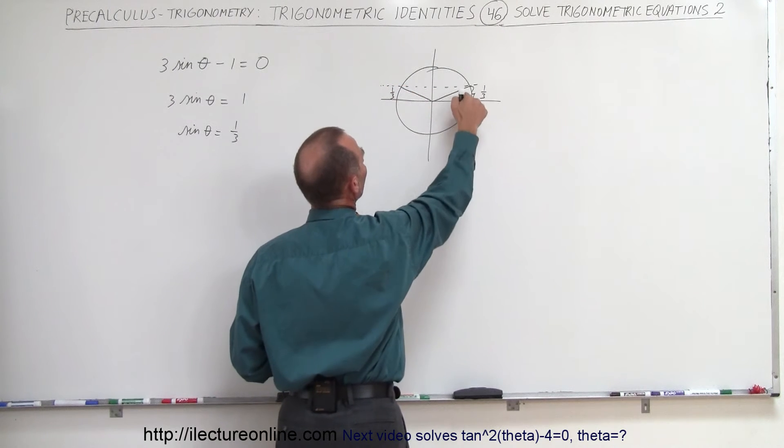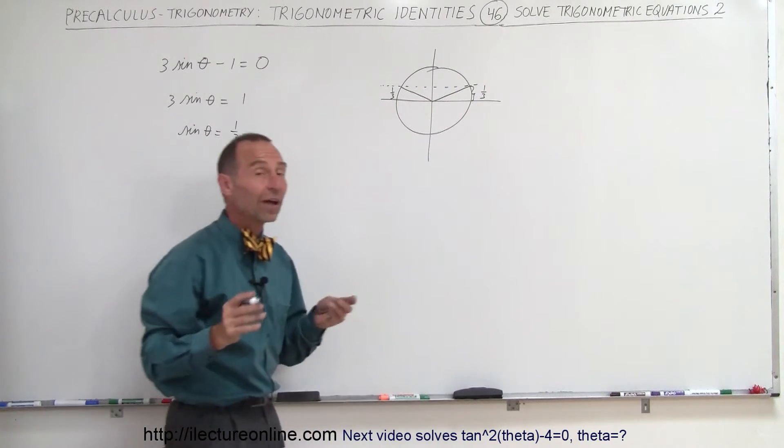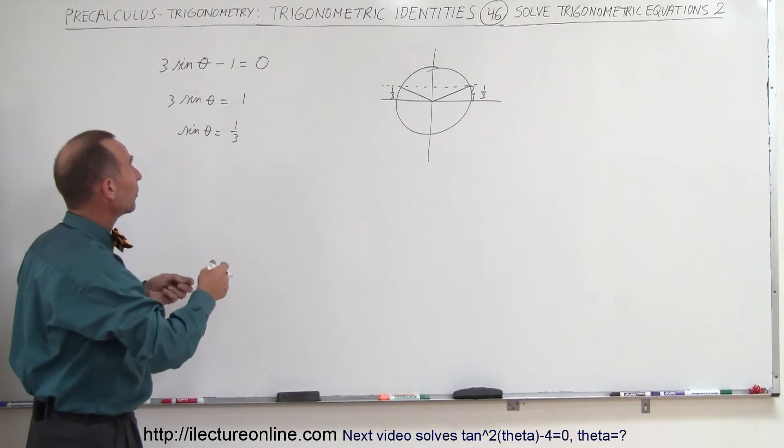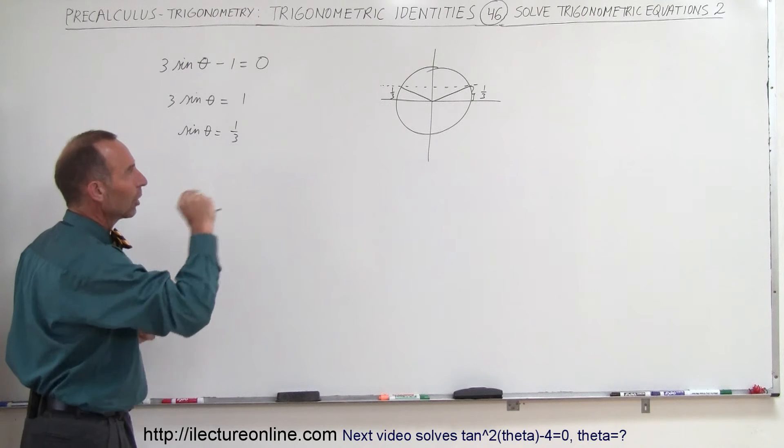So there should be two solutions. We have a positive angle here between 0 and 90 and we have an angle between 90 and 180 that would satisfy that particular solution. Remember when we're looking for the sine we're looking for the y value of a point along the unit circle.